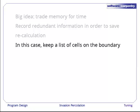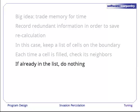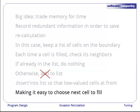In this case, we're going to keep a list of the cells that are on the boundary of the region we've filled so far. That's redundant information because everything we're recording is also already in the grid. Each time a cell is filled, we will check its neighbors. If those neighbors are already in the list, we won't do anything. We won't re-add them to our list of neighboring cells. But if any of the cells aren't already in the list, we will put them in. In fact, we will insert them in order to ensure that the cells with lowest value are always at the front of the list. This makes it easy to choose the next cell to fill. We just look at all of the cells at the front of the list with equal lowest value and pick one of them at random.